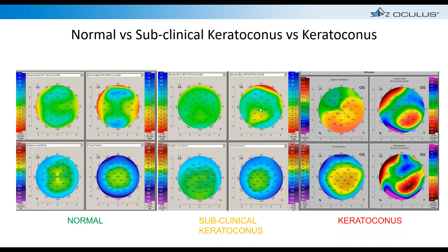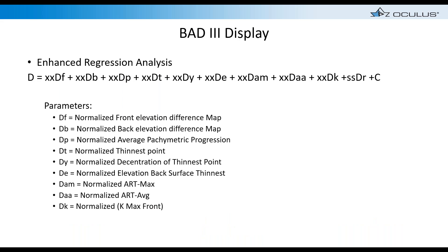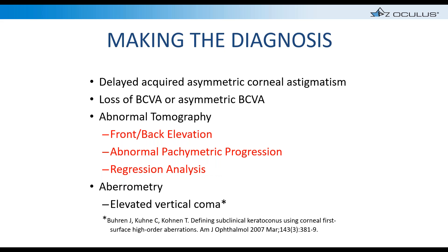What makes the BAD display differentiate the Pentacam from any other instrument is its normative database and enhanced regression analysis. The device uses nine different parameters, each weighted differently, to determine the risk of ectasia. A diagnosis is never made on a single map alone. You always need to look at both eyes, since keratoconus is an asymmetric disease. Also look for acquired asymmetric corneal astigmatism, changes in glasses prescription over time, and if one eye keeps increasing in astigmatism — that's a warning sign.